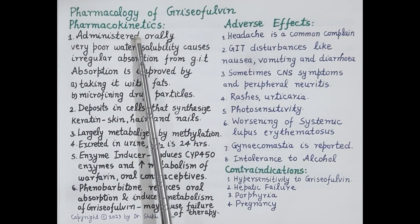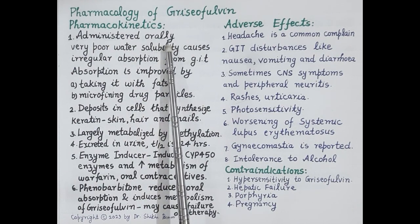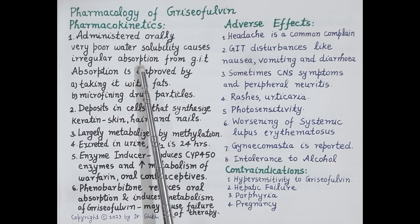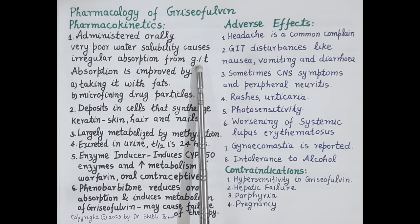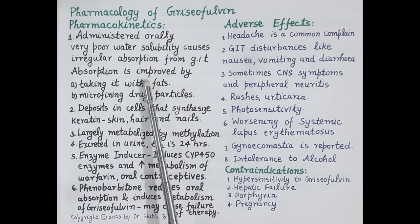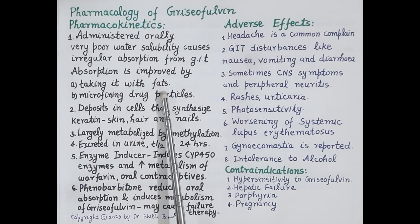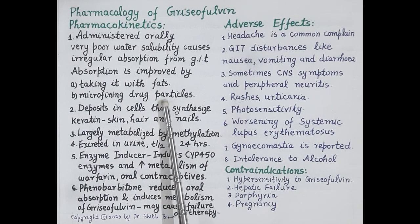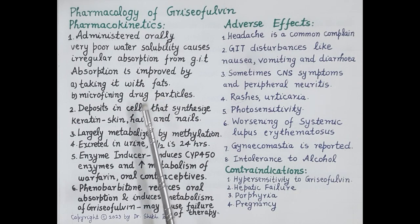Regarding pharmacokinetics: griseofulvin is administered orally and is poorly water-soluble, causing irregular absorption from the gastrointestinal tract. Absorption can be improved by taking it with fats — for example, with milk — and also by micronizing or reducing the particle size of the drug. Nowadays, ultra-microfine preparations of griseofulvin are available.